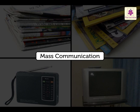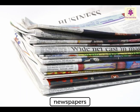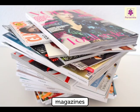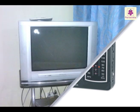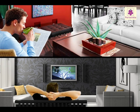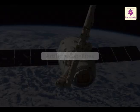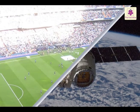Mass communication means sending messages or information to a larger number of people at the same time. Newspapers, magazines, radio, and television are means of mass communication. These means of mass communication help consumer goods companies to advertise their products to a large number of people at the same time, which increases their sales. People also come to know about any new product that is available.